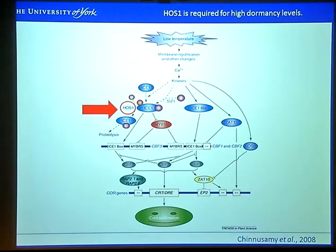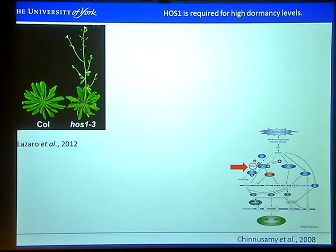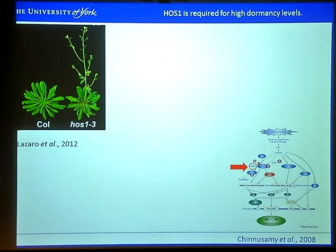We continued our search for other components of the cold acclimation pathway to see whether any could have a role in the temperature regulation of dormancy. The next thing we looked at was HOS1. HOS1 is an E3 ligase important for targeting ICE1 for ubiquitination. HOS1 mutant plants flower early, and since circadian clock mutants with early or altered flowering phenotypes have also been shown to have roles in dormancy regulation, this makes HOS1 an interesting candidate to explore.